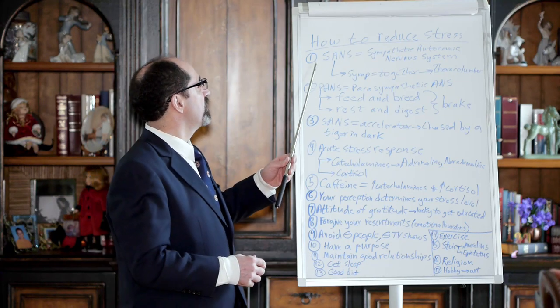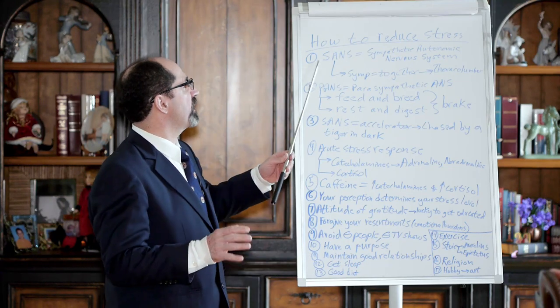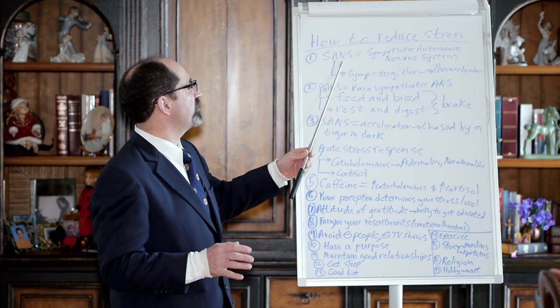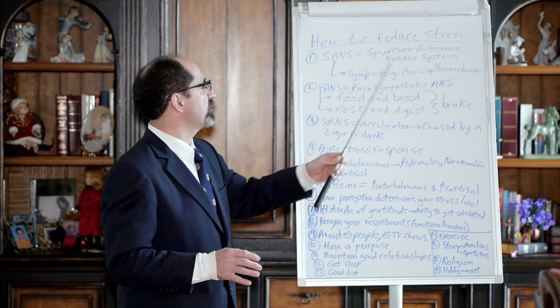We're going to talk about how to reduce stress. First thing, a little bit about what is stress. Sympathetic Autonomic Nervous System, SANS, Sympathetic Autonomic Nervous System.